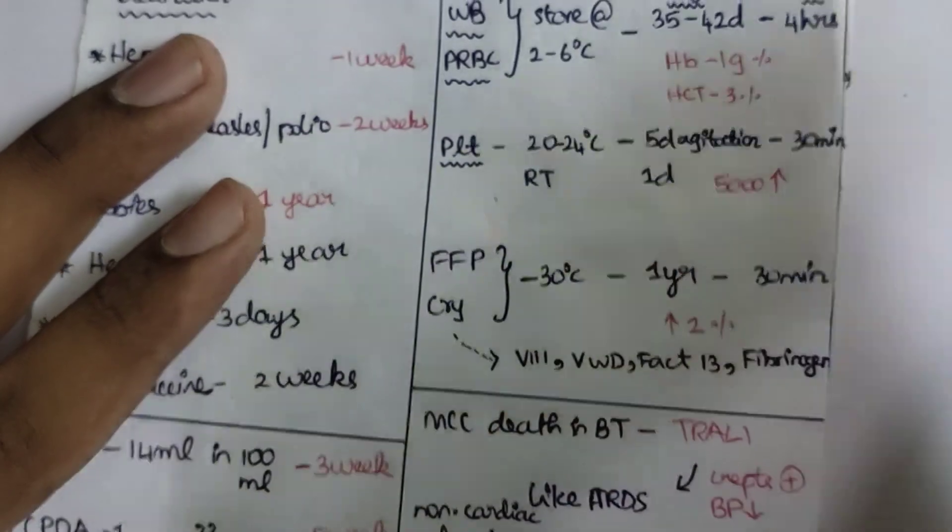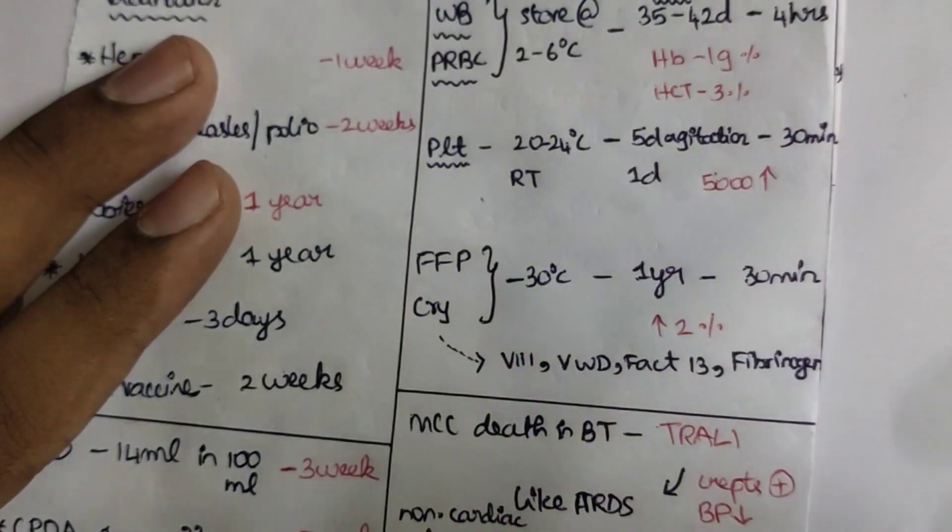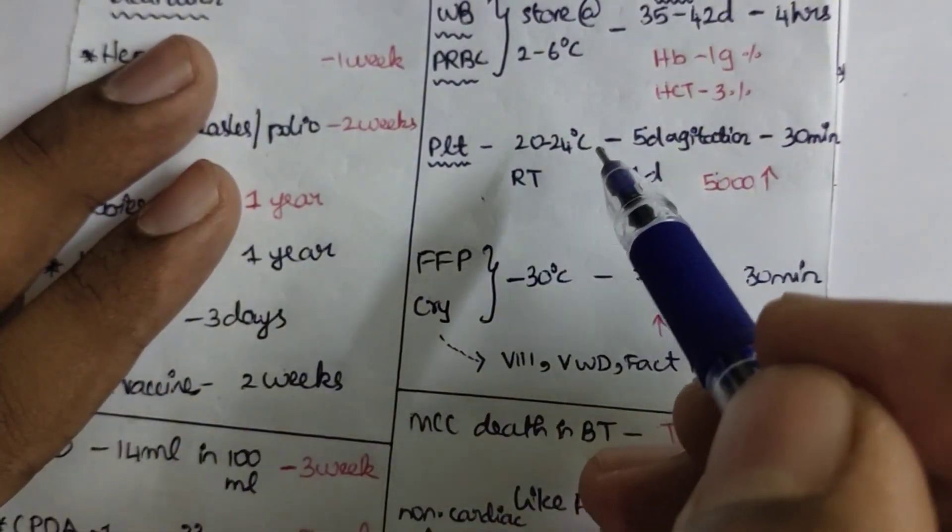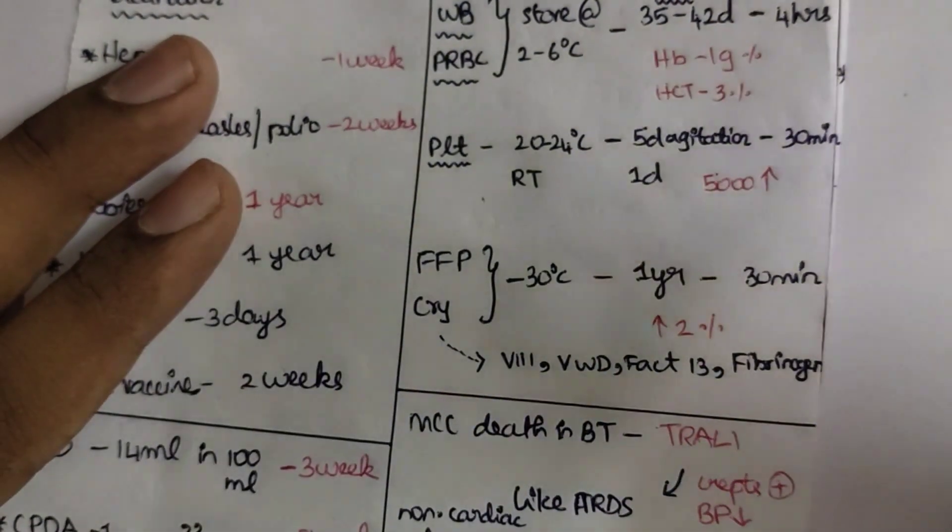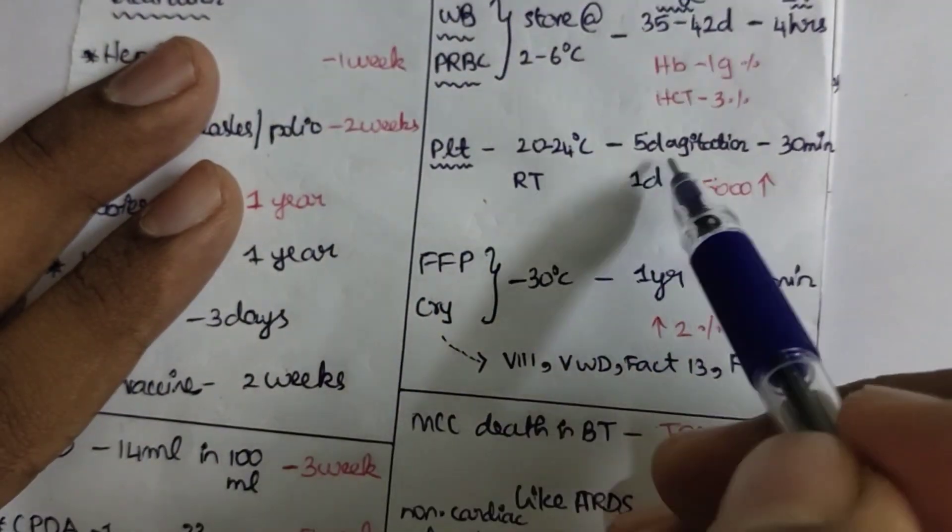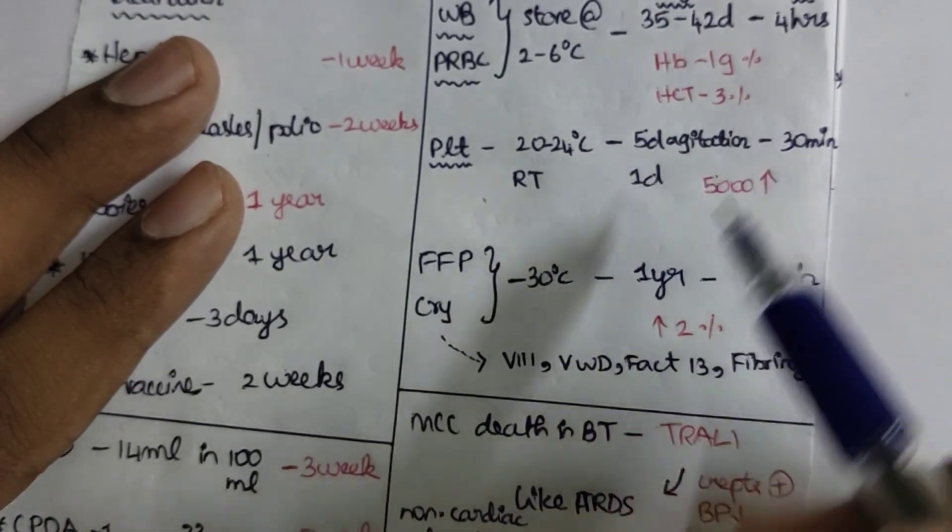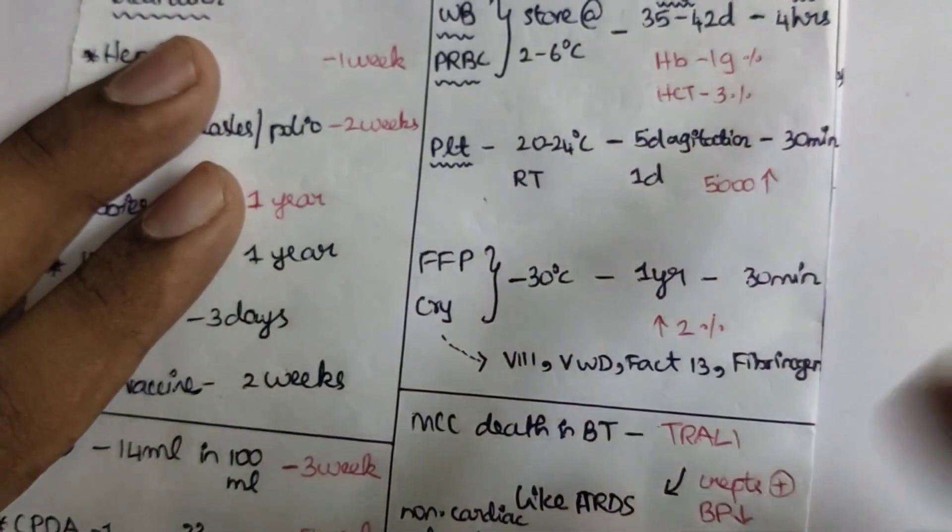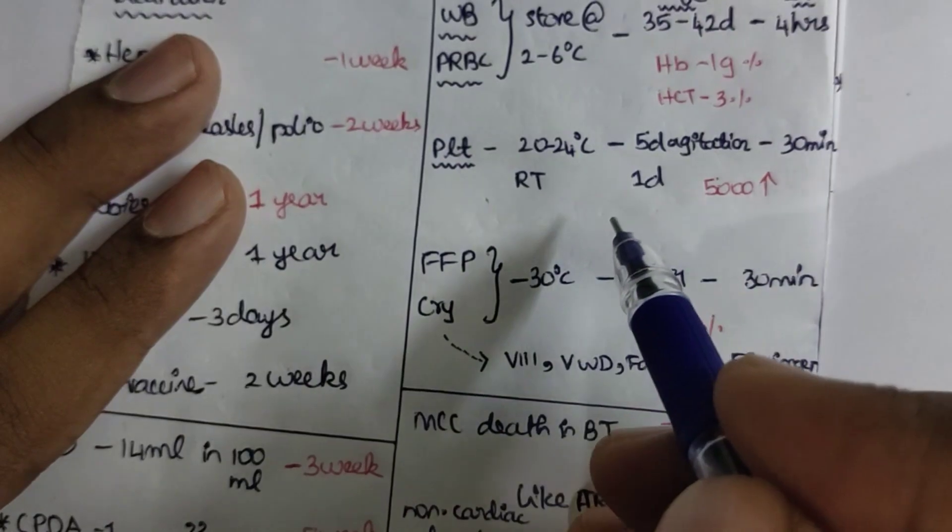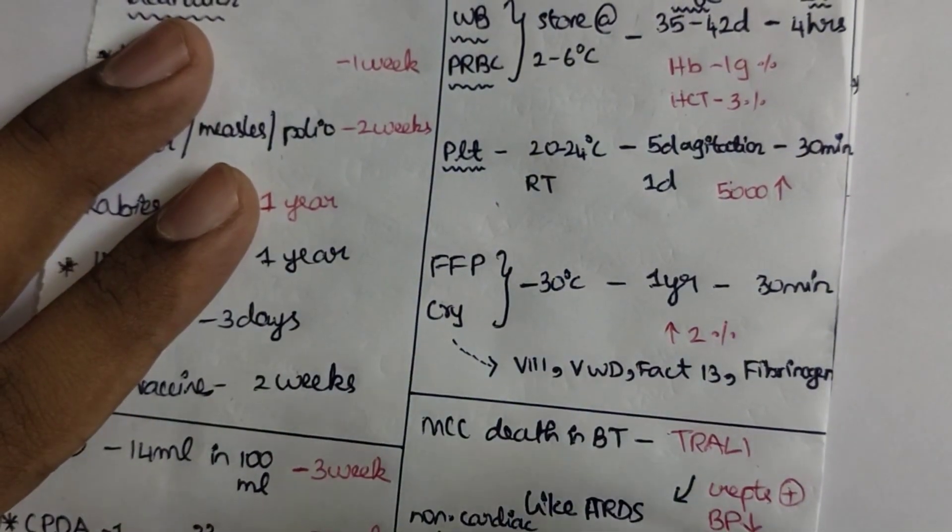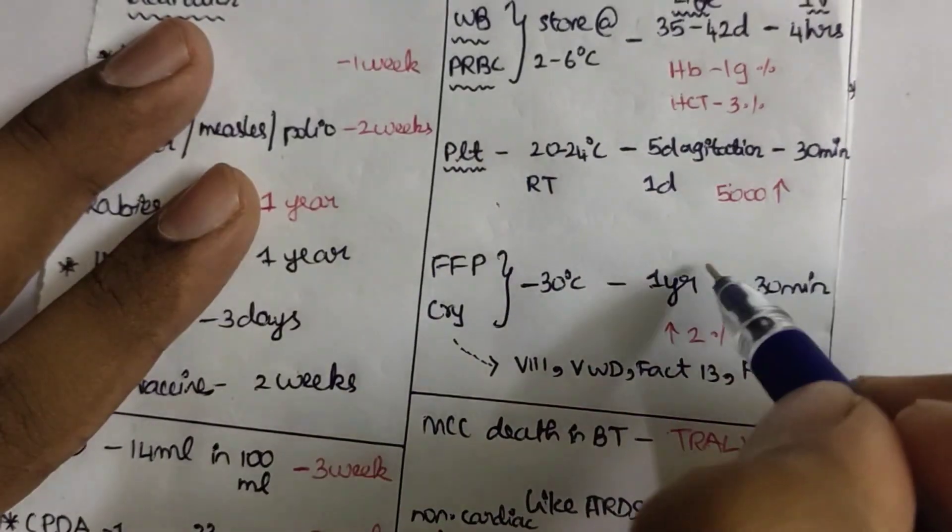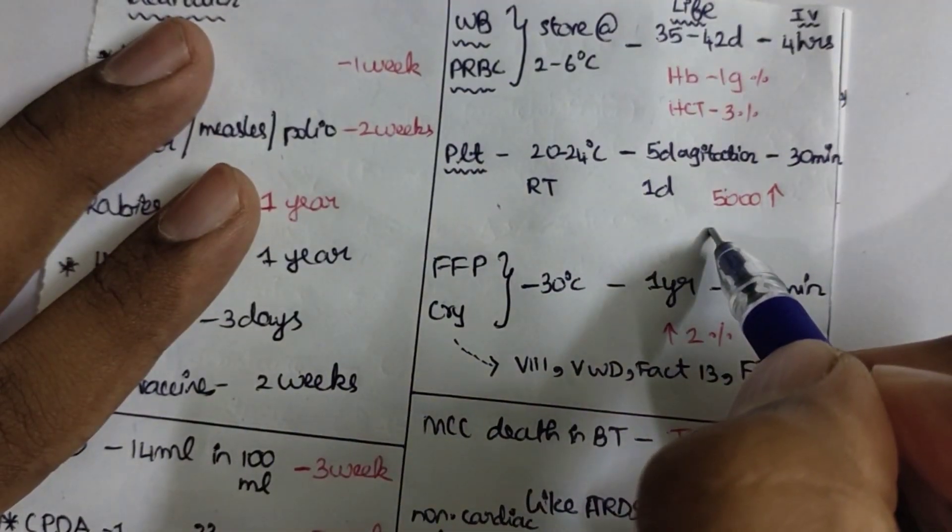Platelets can be stored at room temperature, that is 20 to 24 degrees Celsius. If it is under agitation, we can store for about five days. If there is no agitation, the validity will be only one day. Each platelet blood bag can increase the patient's platelets by about 5,000.